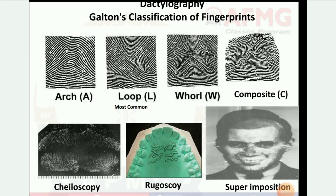Next images: dactylography — Galton's classification of fingerprints: arch, loop, whorl, and composite. Cheiloscopy, rugoscopy, and superimposition. Most common fingerprint type is loop. Fingerprinting.